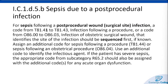The guidelines for Chapter 1 were slightly changed. If a patient has sepsis following a post-procedural wound, we would use a T code. If they're an OB patient, we would use those O codes — those take precedence over everything else. The OB code gets sequenced first, and then we would assign an additional code for sepsis following a procedure, which is T81.44, or sepsis following an OB procedure, O86.04.